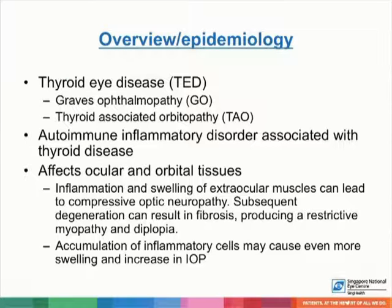Thyroid eye disease is also known as Graves ophthalmopathy or thyroid-associated orbitopathy. It is an autoimmune inflammatory disorder associated with thyroid disease and affects ocular and orbital tissues. It's characterized by inflammation and swelling of extraocular muscles, which can lead to problems such as compressive optic neuropathy, resulting in fibrosis and producing a restrictive myopathy and diplopia. Accumulation of inflammatory cells may cause even more swelling of the extraocular muscles, and hence an increase in intraocular pressure and glaucoma as an end result.